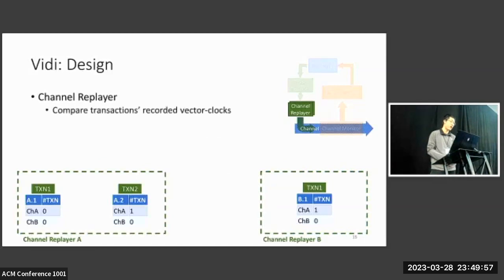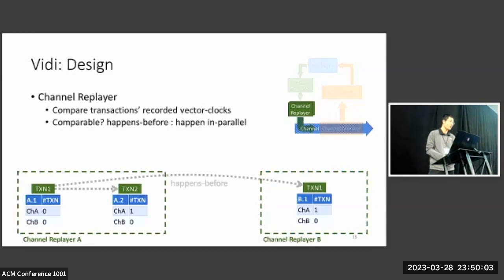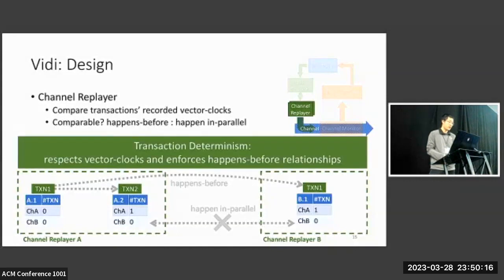The event traces together with their vector clocks will be distributed among channel replayers. And channel replayers will compare transactions' recorded vector clocks among each other. In this example, transaction 1 in channel A has the smallest vector clock, so it happens first. And the vector clocks of the other two transactions are neither greater or less than each other, so they can happen in parallel. In conclusion, the channel replayer realizes our second key idea, transaction determinism. It respects vector clocks and enforces happens-before relationships during replay.